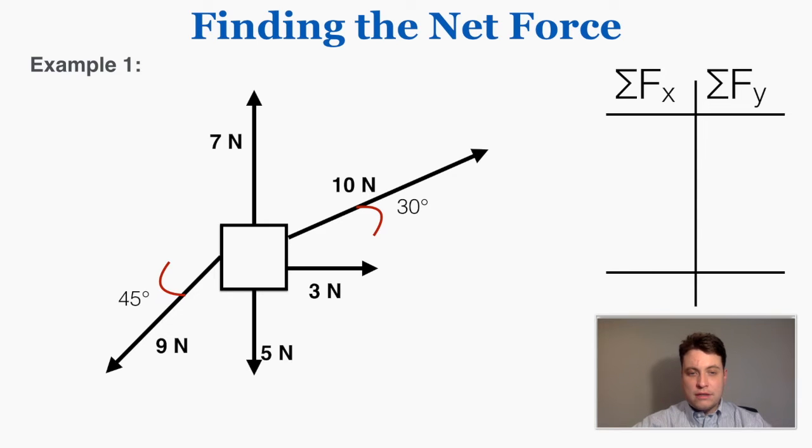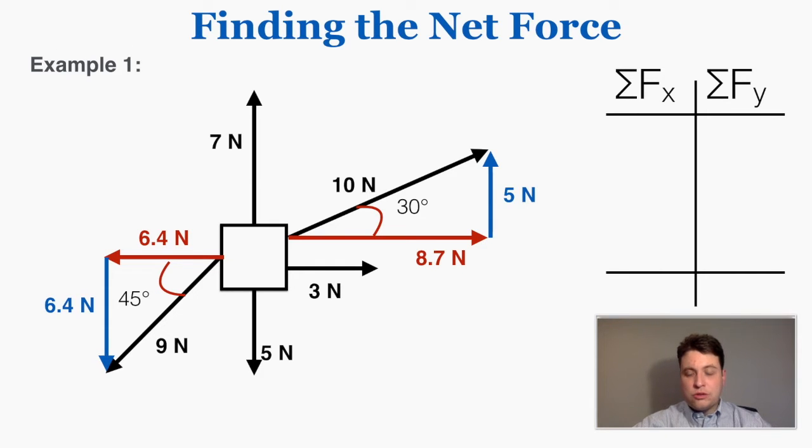Let's say that we have a problem that looks like this with some forces in the perfectly horizontal and vertical direction and others that have certain angles to them. So we want to know what is the total net force in the x-direction and the total net force in the y-direction. To do that, I'm going to start by taking the x and y component of each individual force that has an angle. This will help me sort that force into the two parts of my table. What part of this force is contributing to the y and what part is contributing to the x.